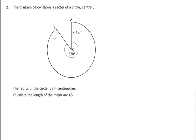We're asked to find the length of this major arc A all the way round to B, which is a fraction of the whole circumference of this circle.